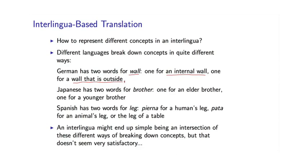Japanese has two words for brother: one for an elder brother and one for a younger brother. Spanish has two words for the English word leg — one for a leg of a human, and another for the leg of an animal or the leg of a piece of furniture, like a table. As you go through language by language, you find that each language has its own way of breaking up the world into different concepts. If you're not careful, the interlingua is simply going to be an intersection of these different ways of breaking things down. Every time you add a new language, you will likely find some distinction made in that language which you hadn't thought of when designing the interlingua. So the bottom line is designing an interlingua might be a very, very difficult task because of these kinds of conceptual problems.